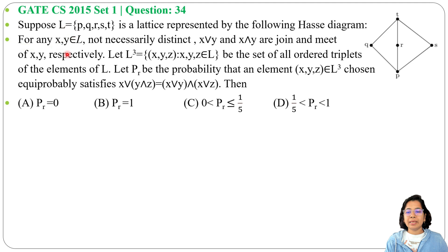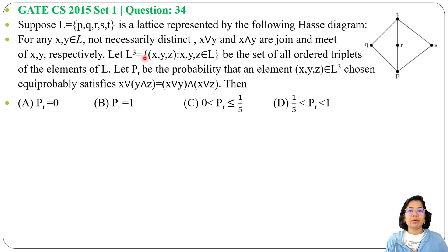For any x, y belonging to L — not necessarily distinct — x ∨ y and x ∧ y are the join and meet of x and y respectively. Let L³ = {(x, y, z) : x, y, z ∈ L} be the set of all ordered triplets of elements of L. Let P(r) be the probability that an element (x, y, z) ∈ L³, chosen equiprobably, satisfies x ∨ (y ∧ z) = (x ∨ y) ∧ (x ∨ z) — which is the distributive property.